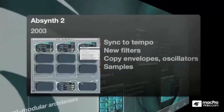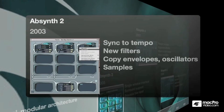Then in 2003 with Absinthe II, you could now lock your envelopes and rhythmic effects to tempo. You could copy envelopes and oscillators, and you could use samples as part of your oscillators.